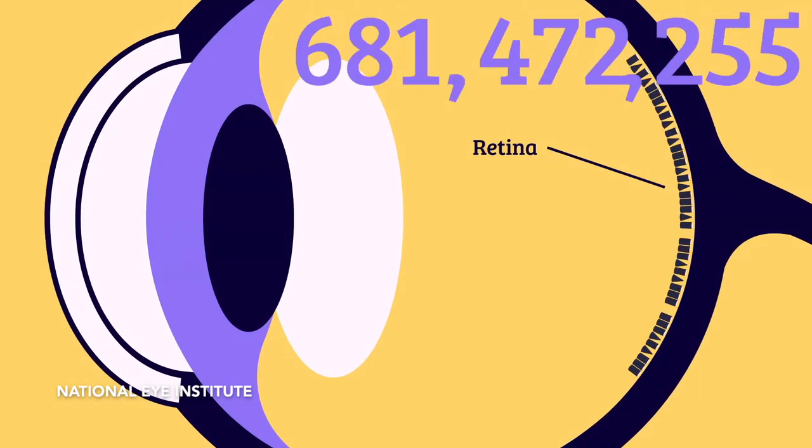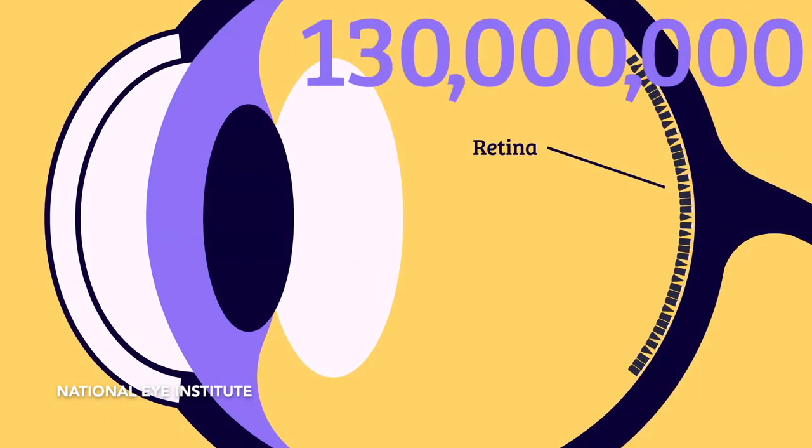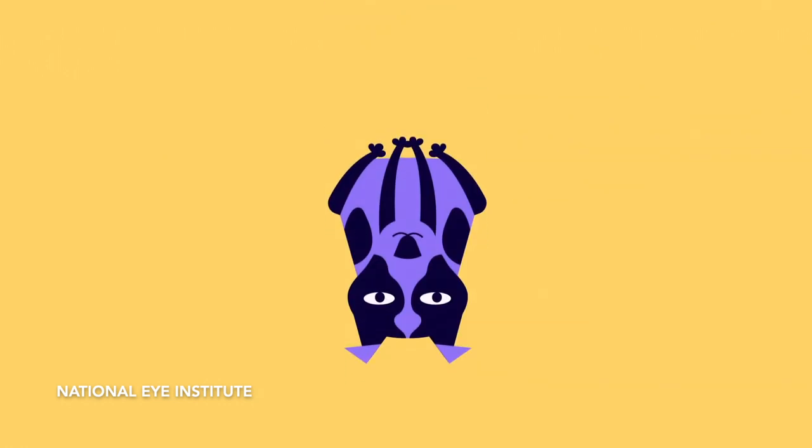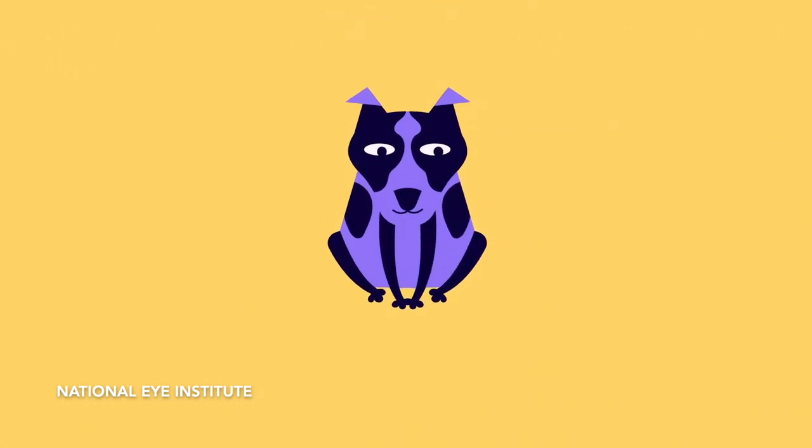The retina has over 130 million cells which are sensitive to light, known as photoreceptors. Now this is where the light information is converted into electrical impulses, which are then passed on to the brain through the optic nerve. The brain processes the incoming information into images and helps us see the world around us.